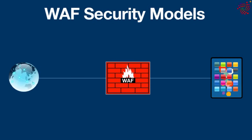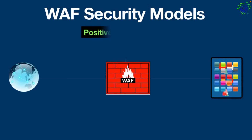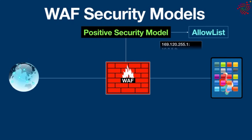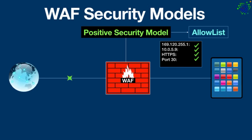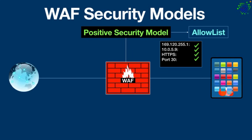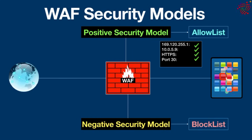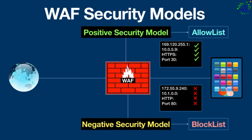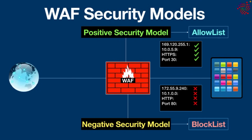Web application firewalls can use a positive or negative security model, or a combination of both. The positive security model works based on an allow list that filters traffic according to a list of permitted elements — anything not on the list is blocked. This is like a bouncer at an exclusive party who only admits people on the list. The negative security model operates based on a block list that only blocks specific items; anything not on the list is allowed.